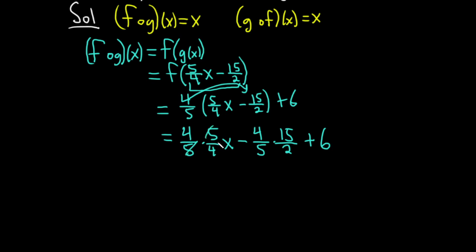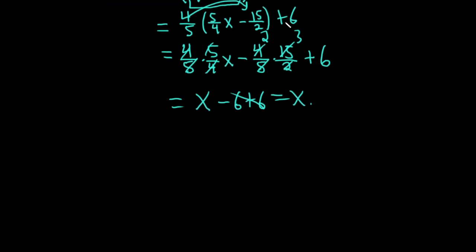So it looks like these go away, which is really good. So we get x. And let's see. 5 goes into 15 three times. And then 2 goes into 4 twice. 2 times 3 is 6. So minus 6 plus 6. Boom. So we get x. So we've checked the first one. The first one is good. Let's go ahead and check the second one.